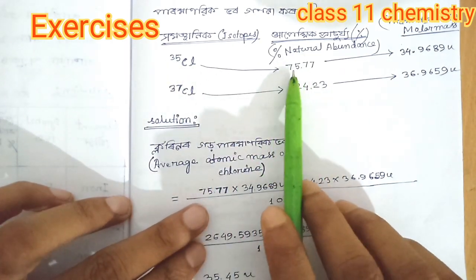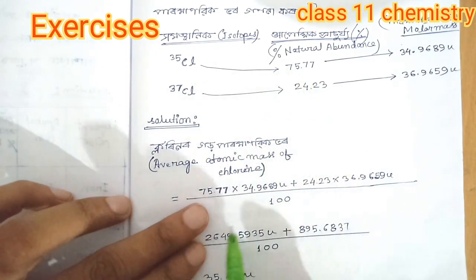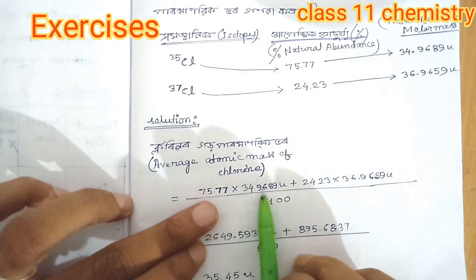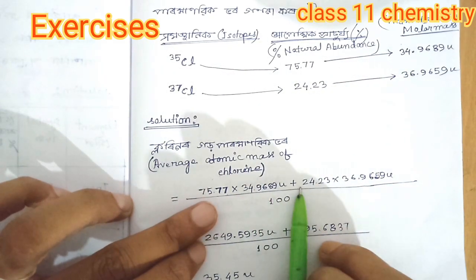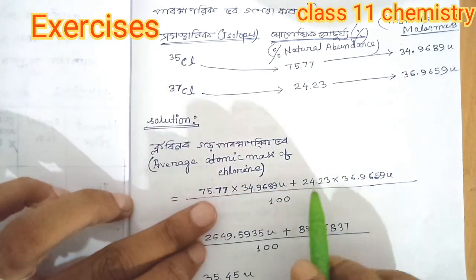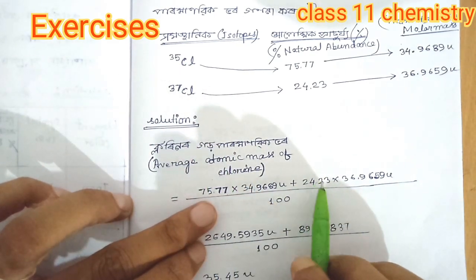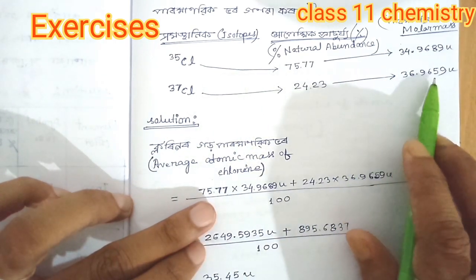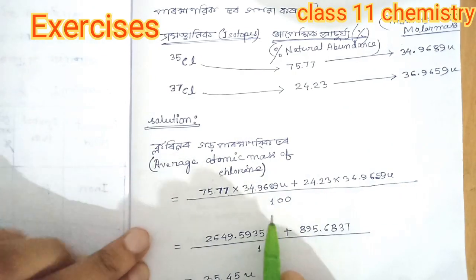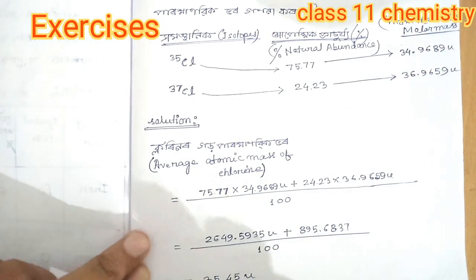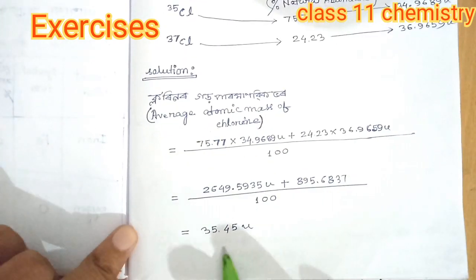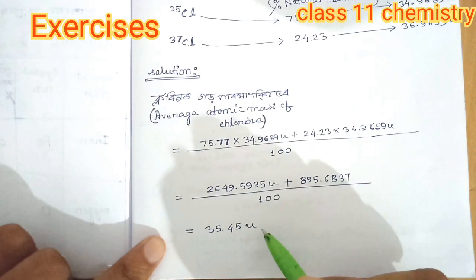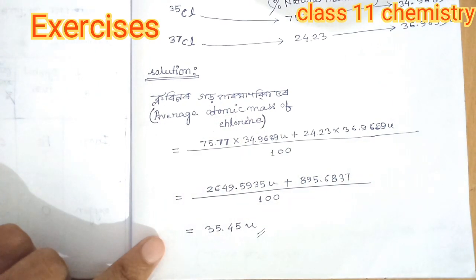So Cl-35 is equal to 75.77 into molar mass. So we can divide that into our molar mass, and we can get 35.45% of the average mass of chlorine.